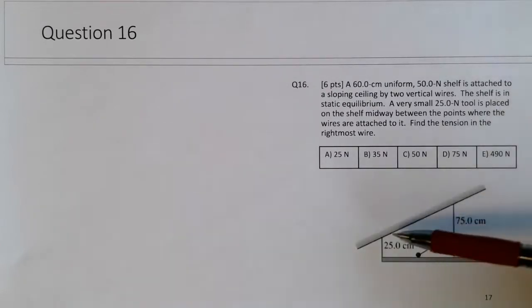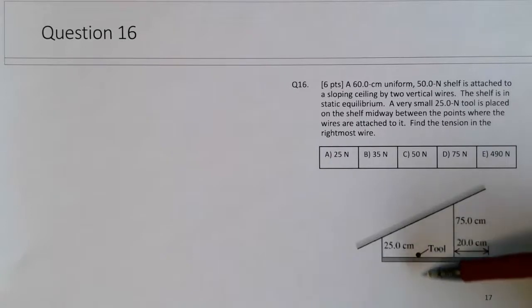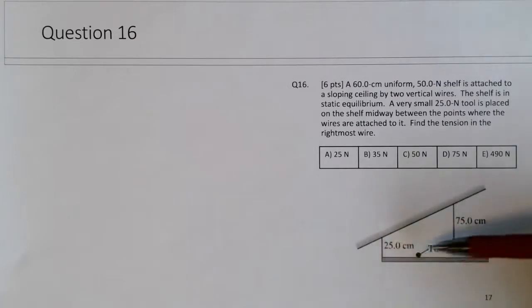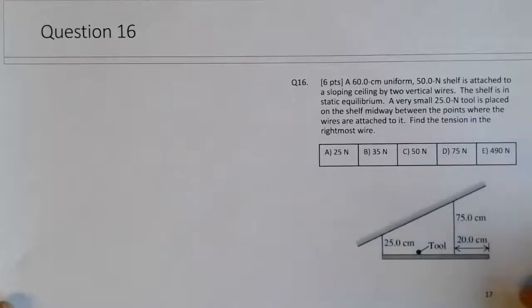In this case, the two upward tensions would be equal to the weight force down plus this normal force down, and the net force on the shelf is zero. But since we'd have two unknowns, we wouldn't be able to solve it purely from a force analysis, so we'd have to apply a torque analysis to solve this problem.